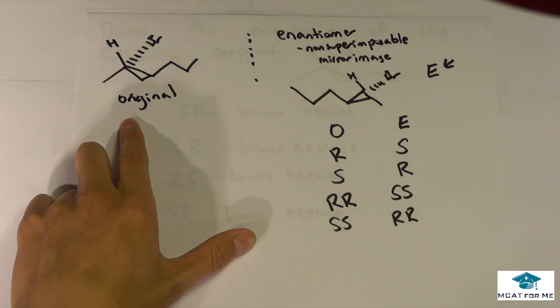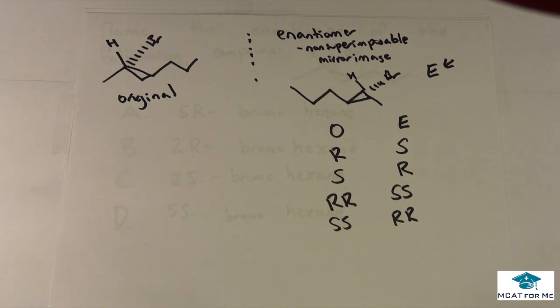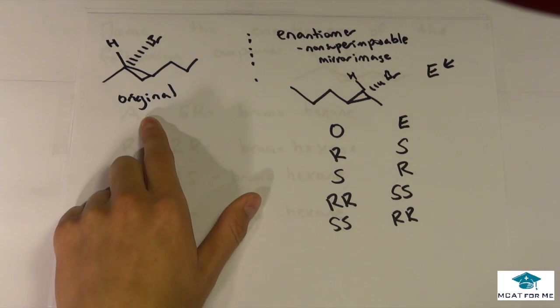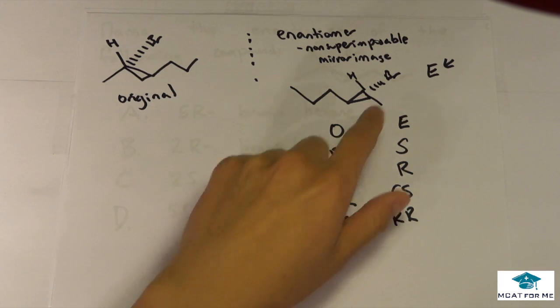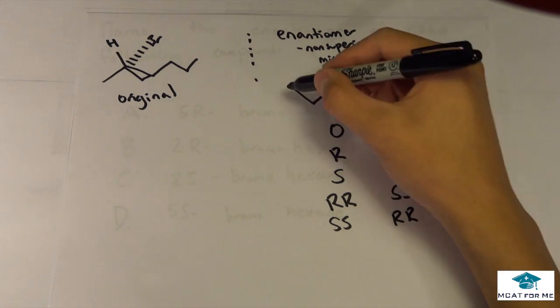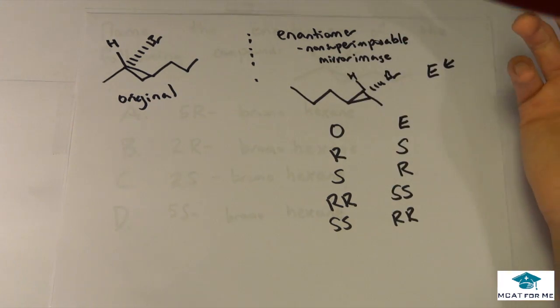What we'll do is name this molecule right here, then say the reverse of that stereochemistry is the enantiomer. Sometimes people make mistakes drawing the mirror image, so you might as well just work with what's on the picture.